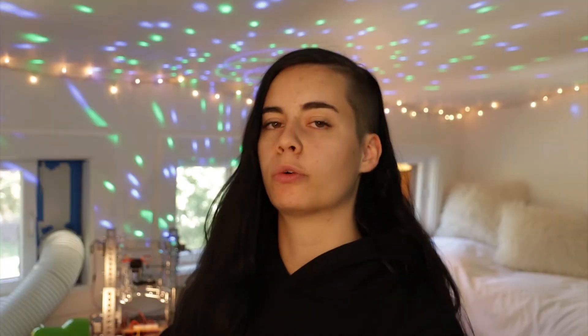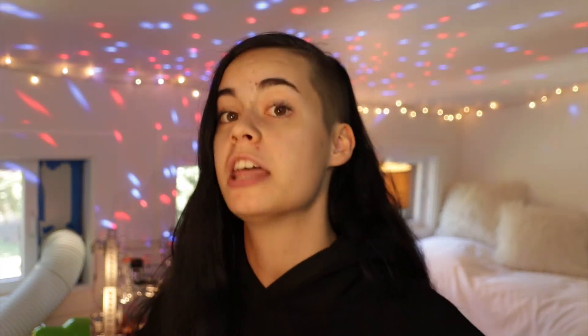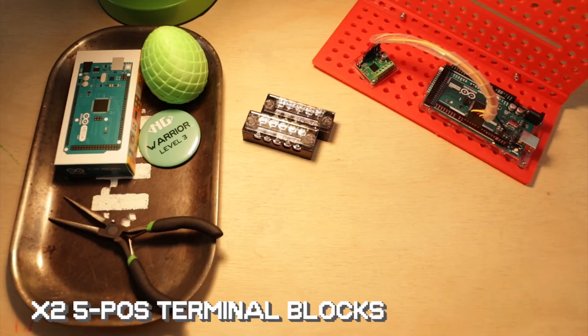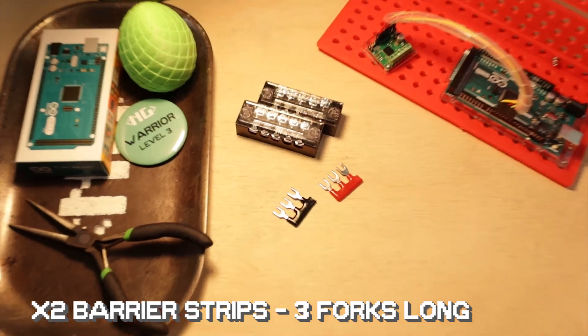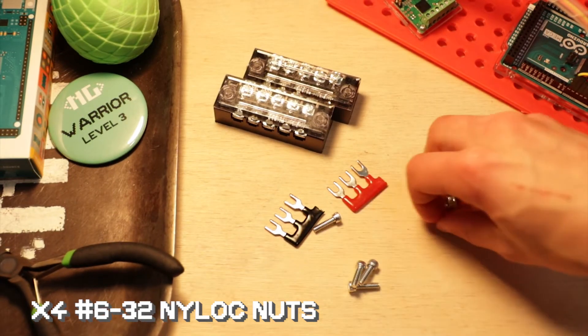Okay, so now it's time to answer one of the big questions: how do we power everything? The answer lies with our pal, the terminal block. Step one. Go ahead and grab two five-position terminal blocks, two barrier strips that are three fork connectors long in black and red, four half-inch screws, and four nylock nuts.